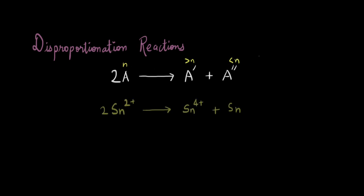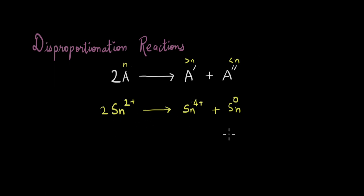Let's take an example: tin in the form of Sn²⁺ is going to Sn⁴⁺, and since tin here is in its free state, its oxidation number will be 0. So in one case the oxidation number has reduced from 2 to 0, and in the other it has increased from 2 to 4. This is a disproportionation reaction — interestingly, the first one ever studied, in the late 1700s.